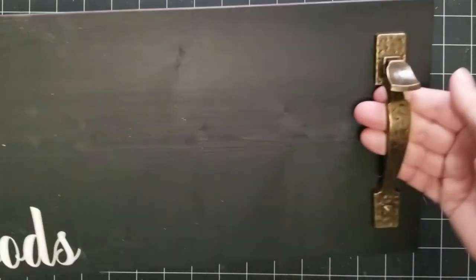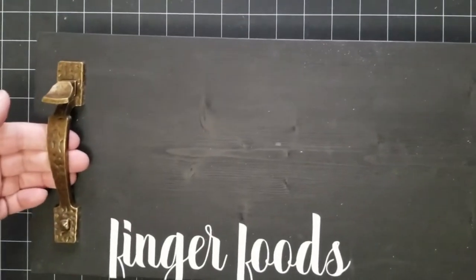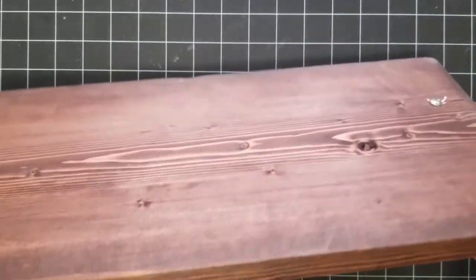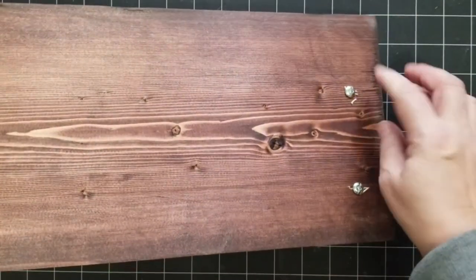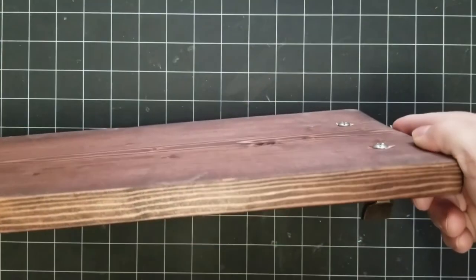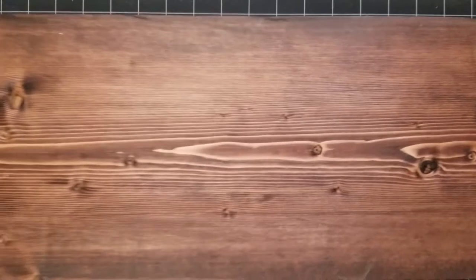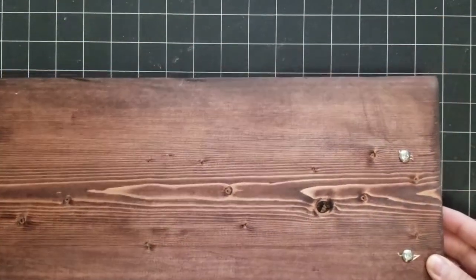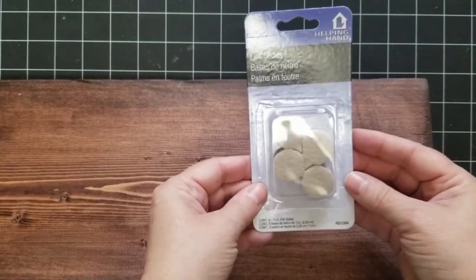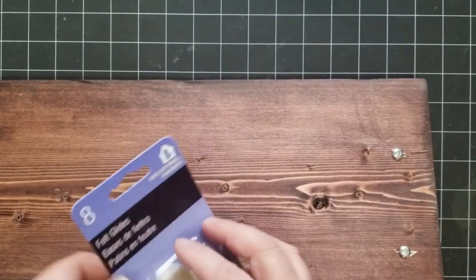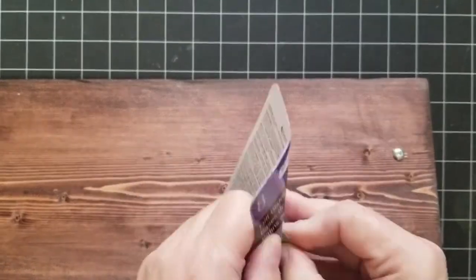So we added handles and I got these handles at a garage sale. And they're actually kind of weird because you have to screw them in from the back. So now I have these little screws that are sticking up. We couldn't countersink them because they were too long.